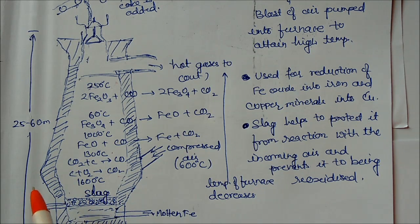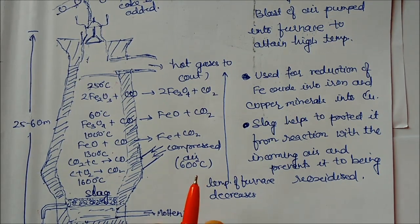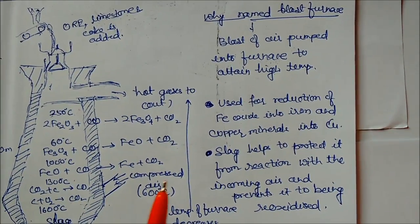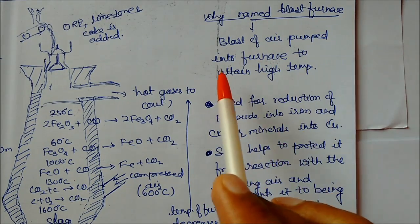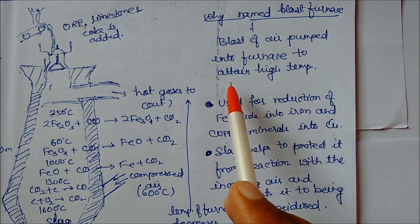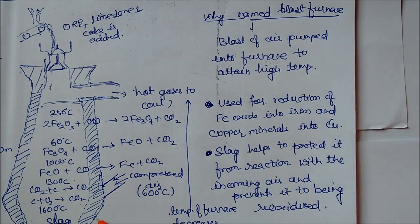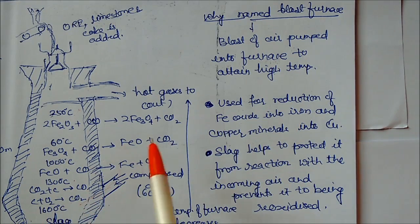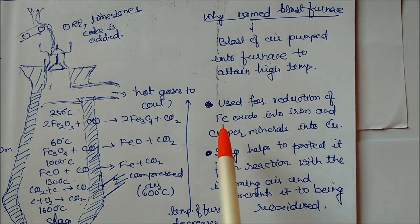We will study this in another topic called extraction of iron. This furnace is very high, 25 to 60 meters, and diameter is 14 meters. Why is it called blast furnace? Blast furnace, basically the name is because a blast of air is pumped into the furnace to attain high temperature.